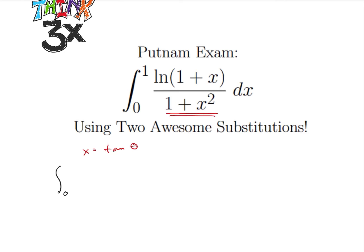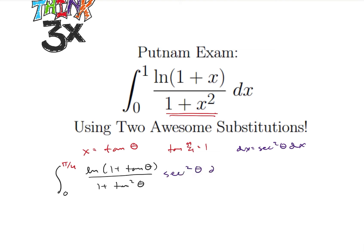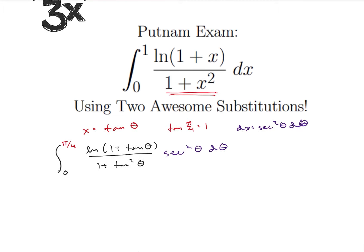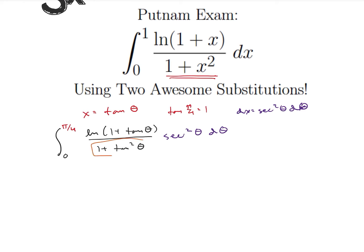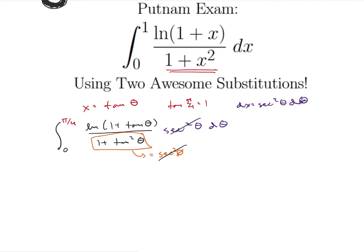We get the integral, and now we're going from 0 to pi over 4, since tangent of pi over 4 is equal to 1. We're going to have the natural log of 1 plus tangent of theta, over 1 plus tangent squared of theta. Then dx equals secant squared of theta d theta. Since 1 plus x squared equals secant squared of theta, we can cancel those out, leaving the integral from 0 to pi over 4 of the natural log of 1 plus tangent of theta, d theta.